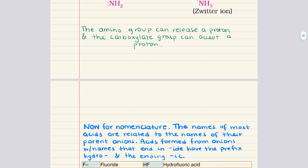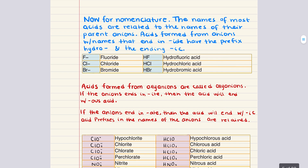Let's move into nomenclature. Understanding the naming convention for acids is crucial in chemistry and helps us identify the composition and characteristics of various acids. Starting with binary acids: binary acids are composed of hydrogen and one other element. When the parent anion's name ends in -ide, the acid name starts with the prefix hydro- and ends with -ic, followed by the word acid. For example, fluoride forms hydrofluoric acid, chloride forms hydrochloric acid, and bromide forms hydrobromic acid.